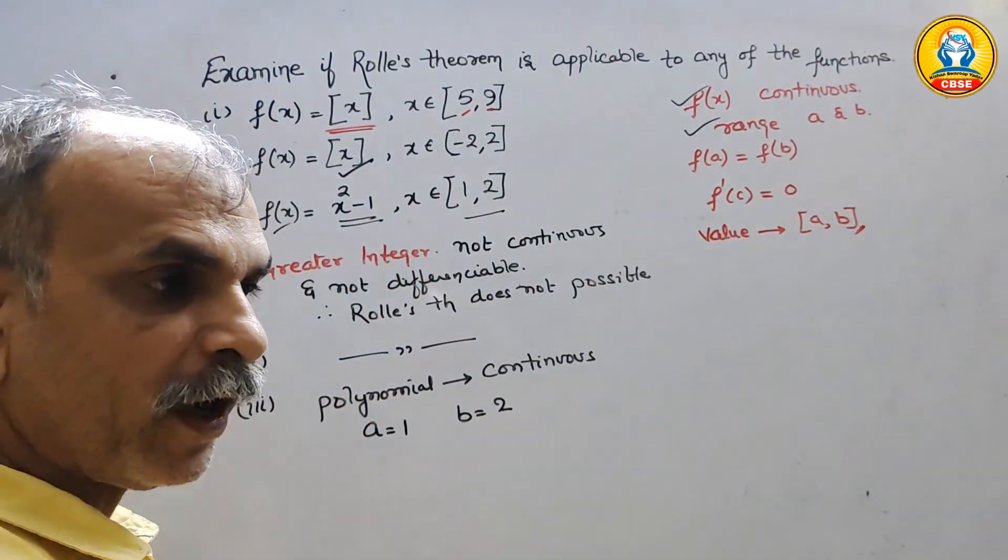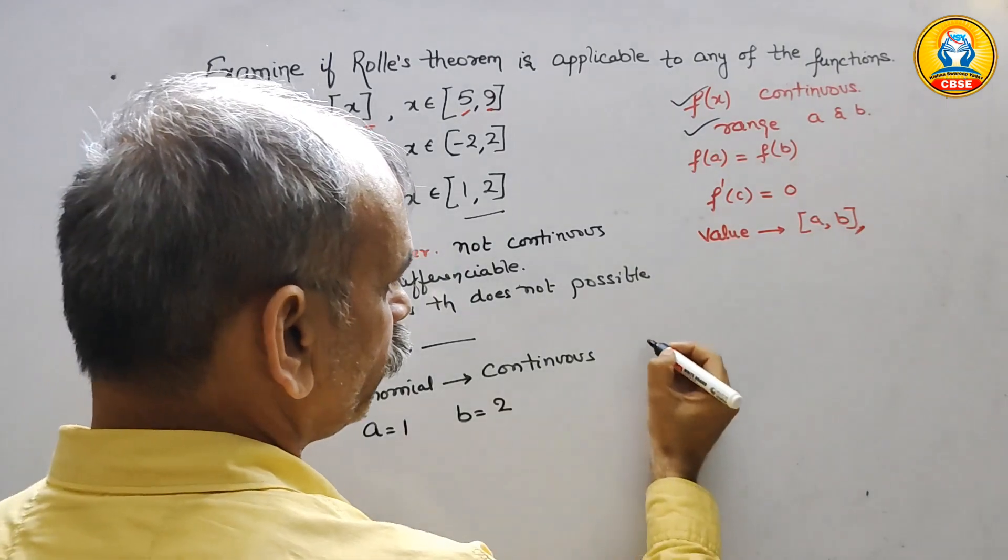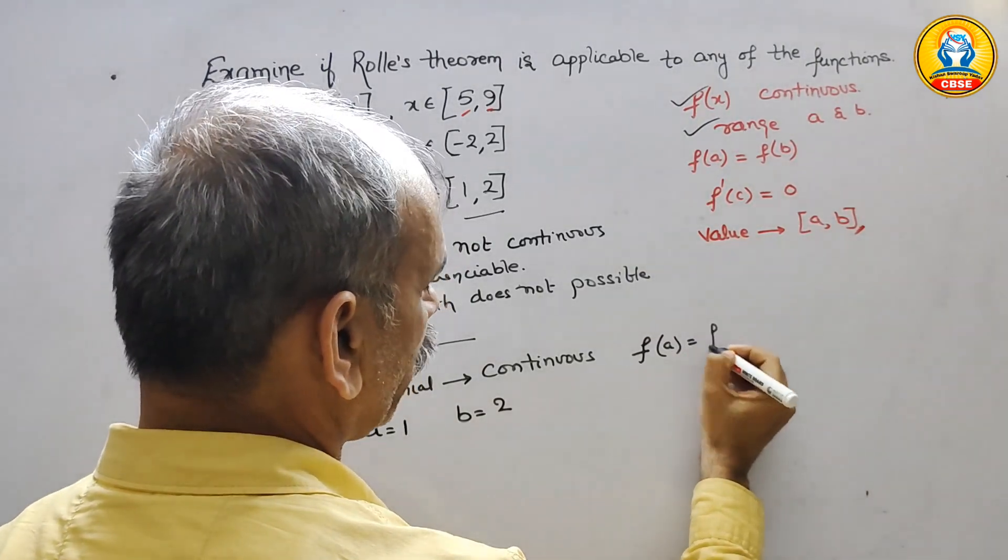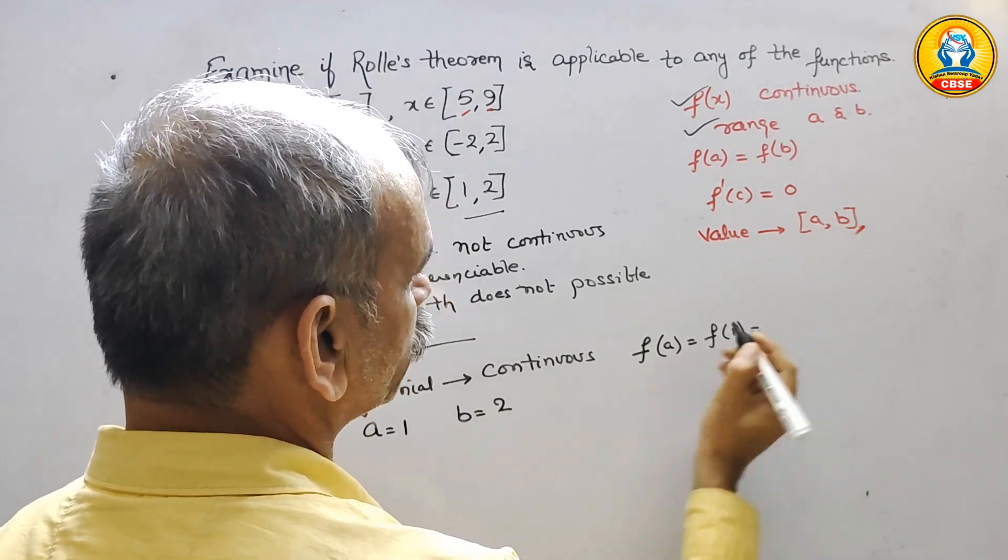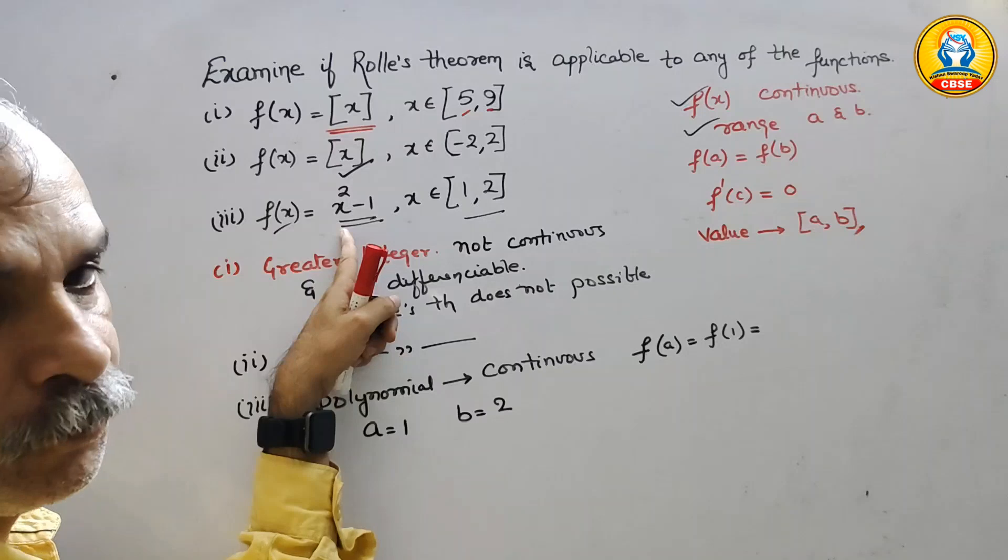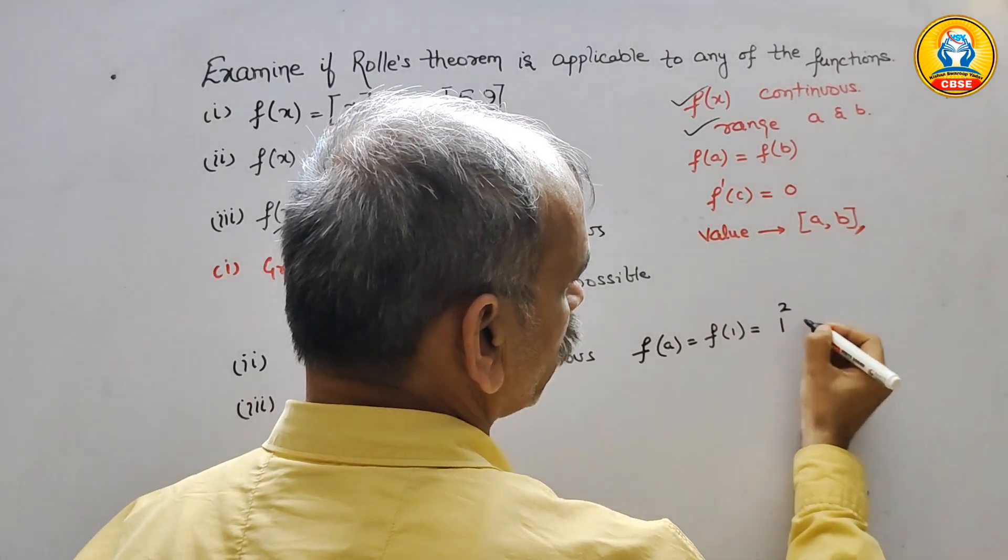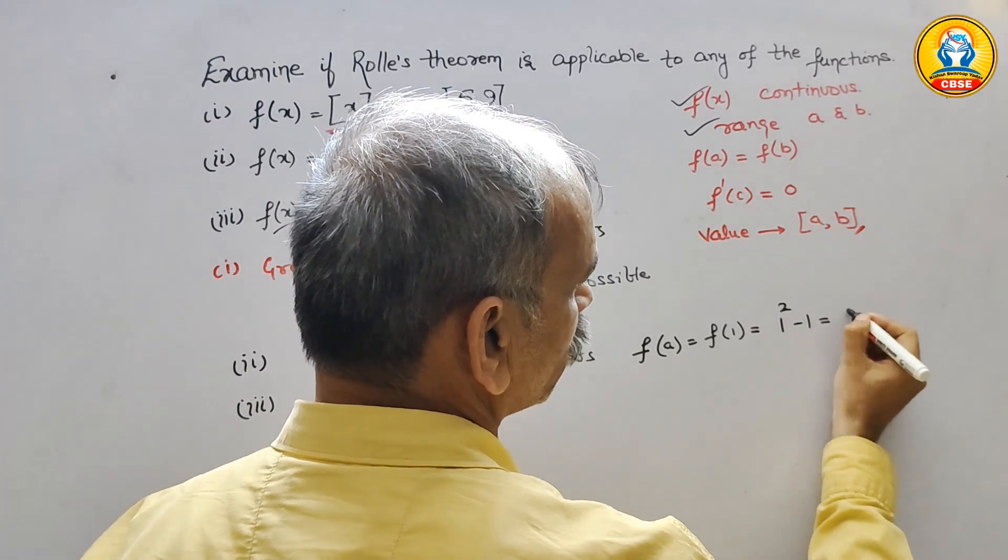Now, we have to find it out F(A). We can say F(A) is equal to F(1) is equal to now. Substitute the value x square minus 1. We will get 1 square minus 1. That is equal to 0.